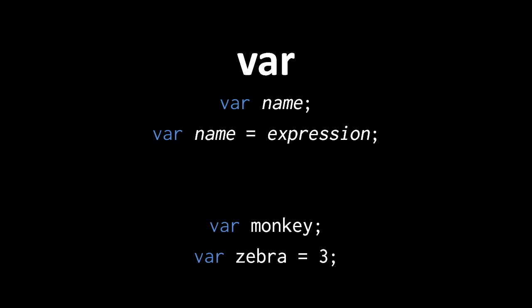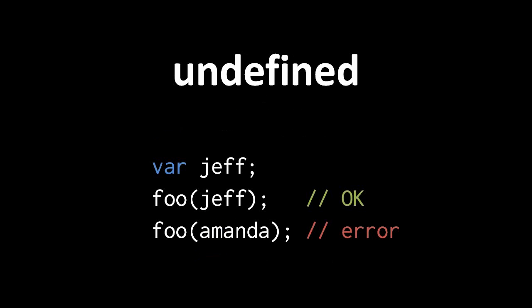When we declare a variable but don't give it a value, its value is not null — rather it's this separate value called undefined. So here for instance if we declare a variable named Jeff but don't give it any value and then pass Jeff as an argument to the function foo, the parameter in that call to foo will itself also be undefined. In contrast, if we attempt to use a variable which we haven't declared — such as imagine there is no variable named Amanda — then that is a language error.